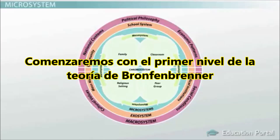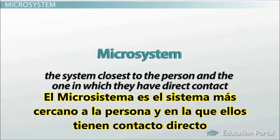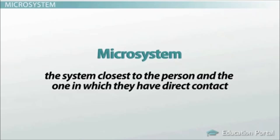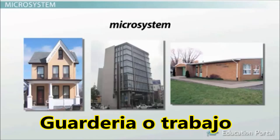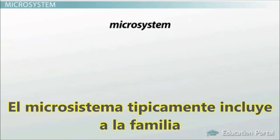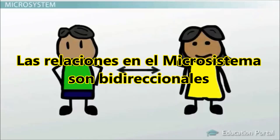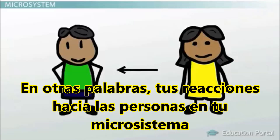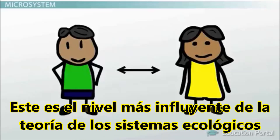We will begin with the first level of Bronfenbrenner's theory: the Microsystem. The Microsystem is the system closest to the person and the one in which they have direct contact. Some examples would be home, school, daycare, or work. A Microsystem typically includes family. Relationships in a Microsystem are bi-directional — your reactions to the people in your Microsystem will affect how they treat you in return. This is the most influential level of the Ecological Systems Theory.